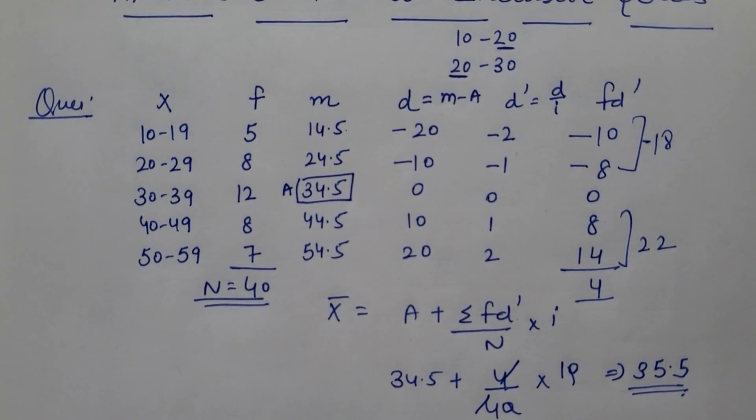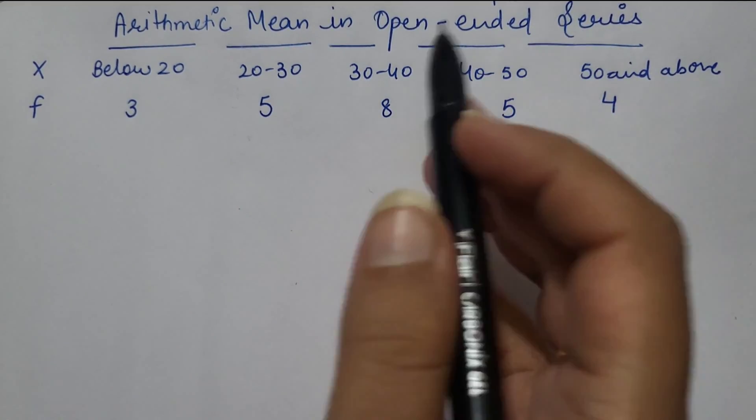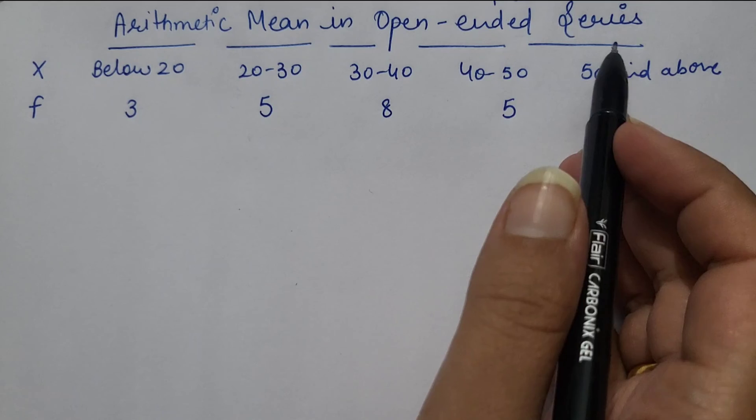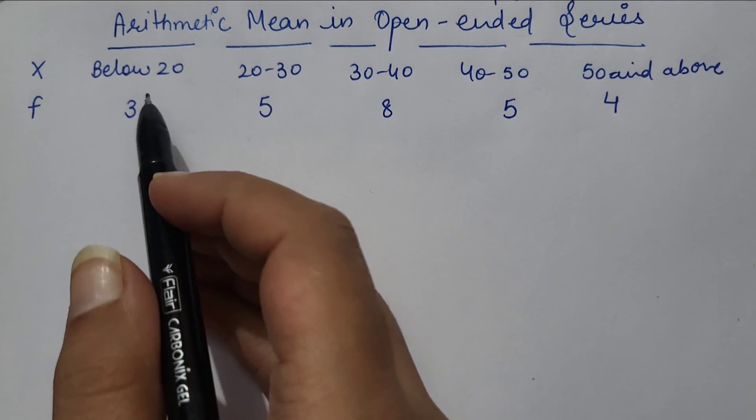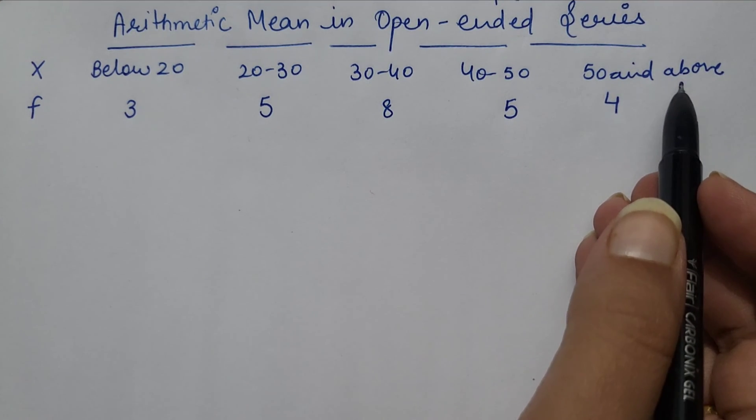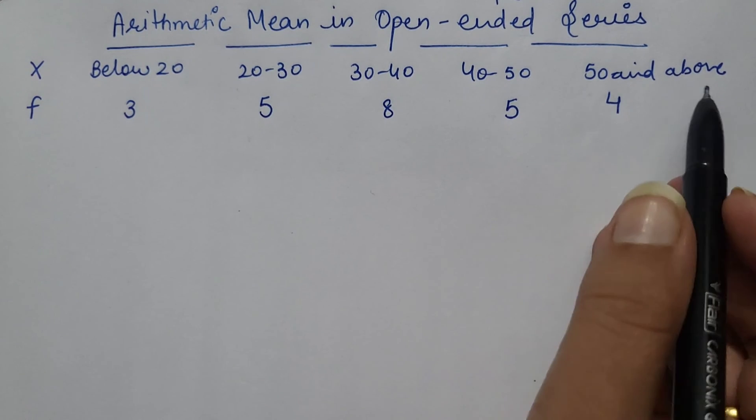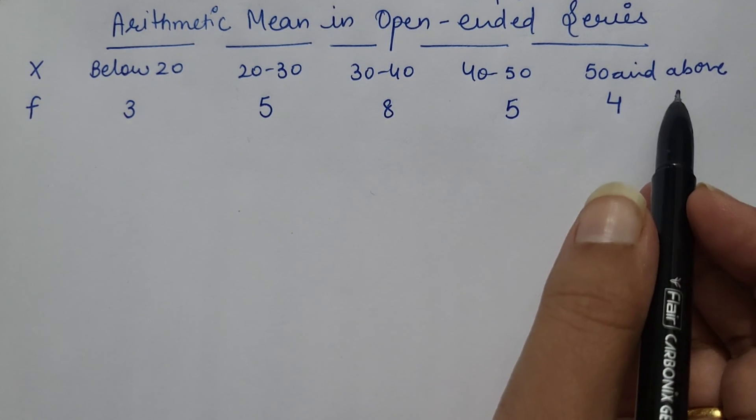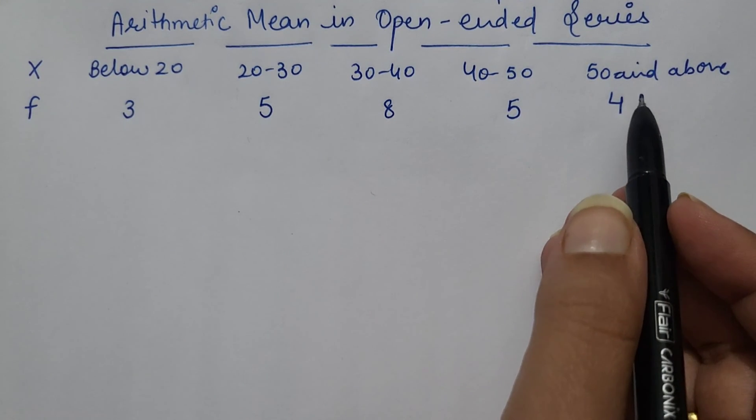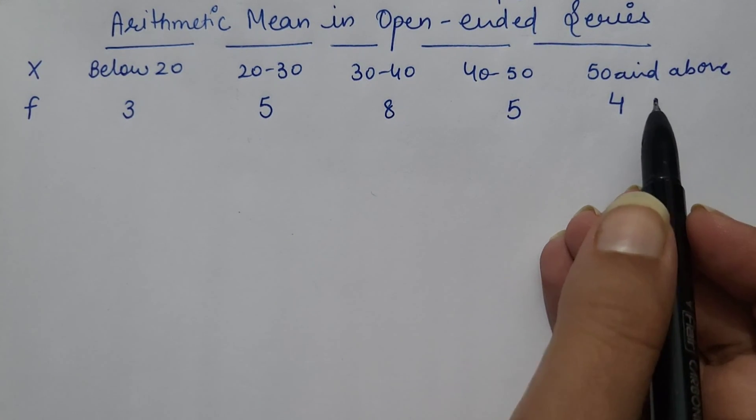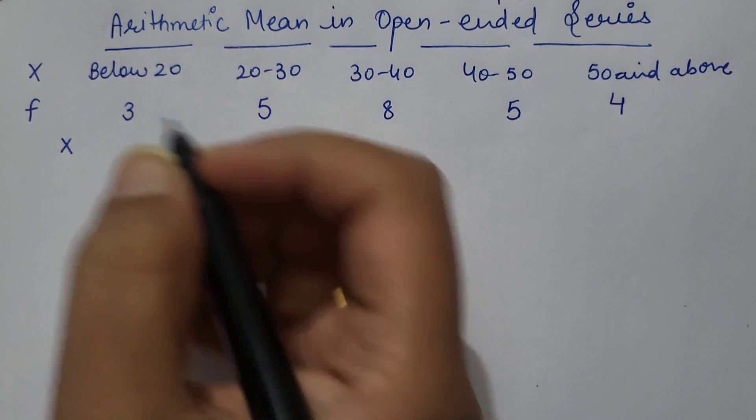Arithmetic mean in open-ended series. Open-ended series kaunsi hoti hai? Jis mein jo aapka first or last interval hai woh actual mein interval form mein nahi hota. Woh open-ended hota hai, like below 20 and 50 and above. For calculation of mean, it is necessary to specify the class interval so that we can take mid-values.